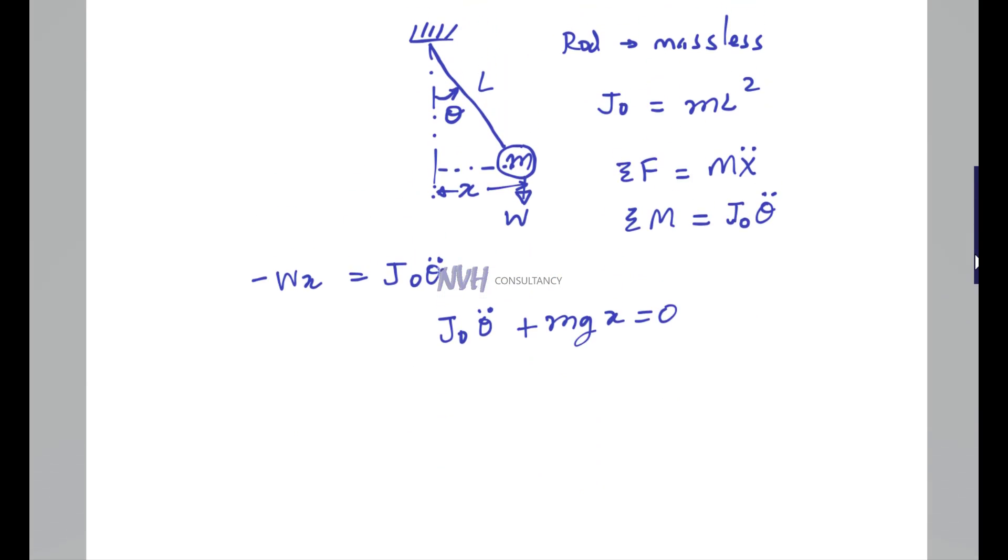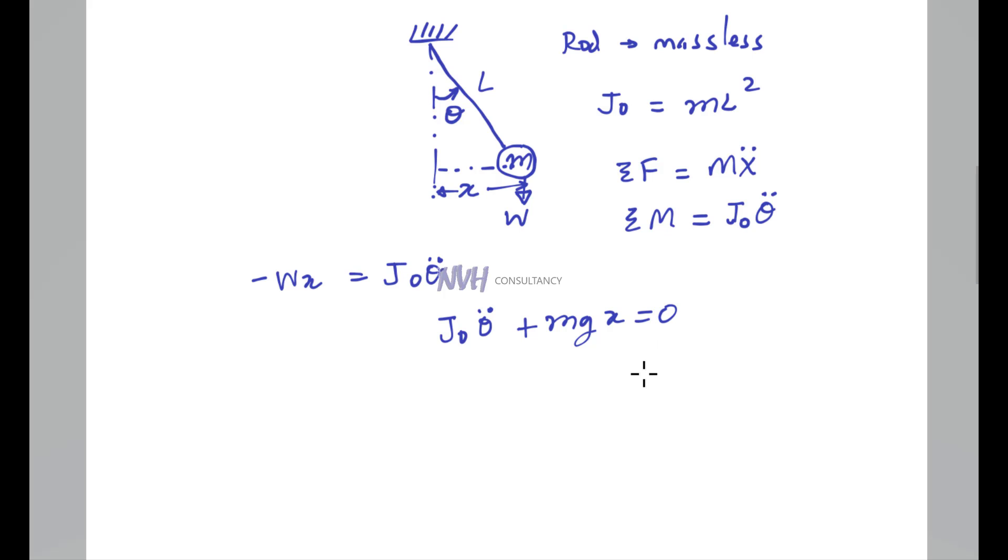We need to find the expression for X. If you look at the trigonometry, you can write X equals L sine θ. But for small angles, if θ is very small, you can say that sine θ approximately equals θ.